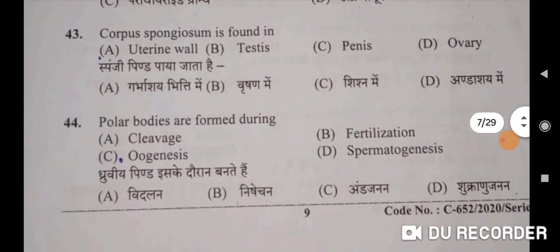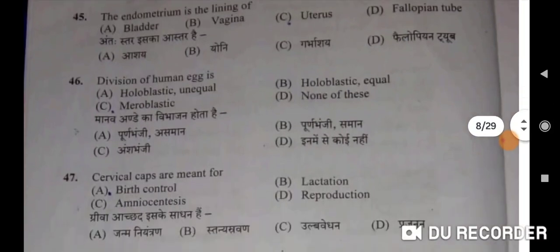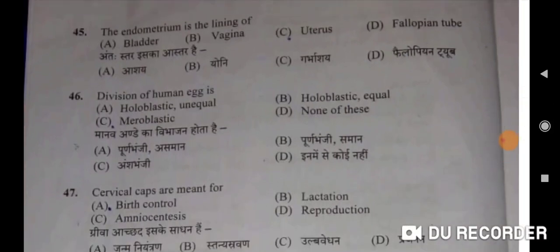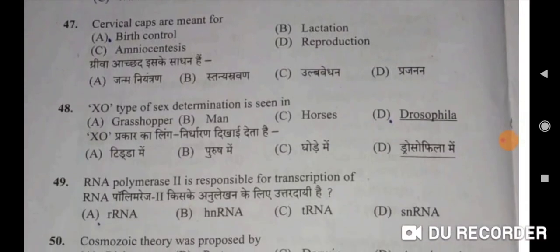Forty-third: corpus spongiosum is found in penis — correct option. Forty-fourth: polar bodies are formed during oogenesis — Option C. Dhruviya pind is ke dauran bante hai andajanan ke dauran. Forty-fifth: the endometrium is the lining of the uterus — C will be the correct option. Antahstar is ka astar hai garbhashay ka. Forty-sixth: division of human eggs is holoblastic and unequal — A will be the correct option. Forty-seventh: cervical caps are meant for birth control — A will be the correct option.